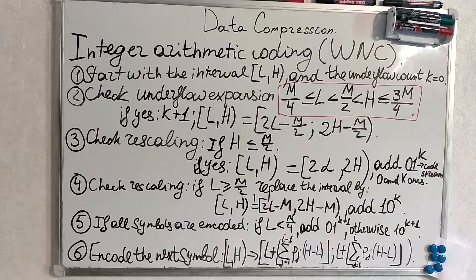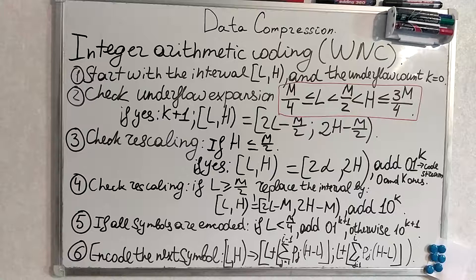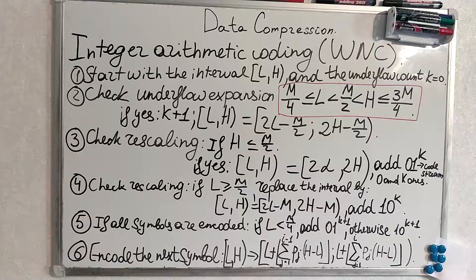We start with the interval L and H, low and high, and the underflow count 0. We check underflow expansion which shall hold this inequality in the red.